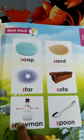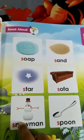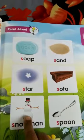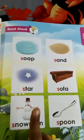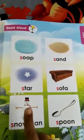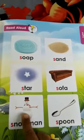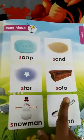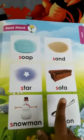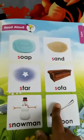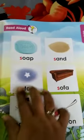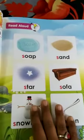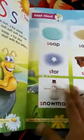S for snowman — it is made up of snow. S, S, snow. S for spoon — S, S, spoon. S for snowman. So kids, revise these pictures with the sound S.